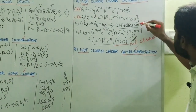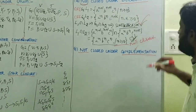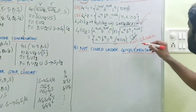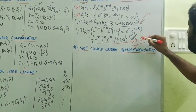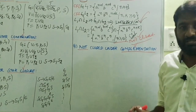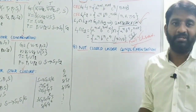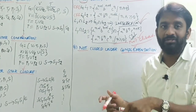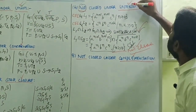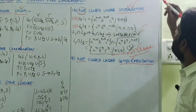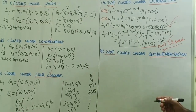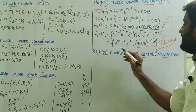By grammar construction we can prove closure under intersection, but by taking the language intersection we can prove it is not closed — this is a contradiction. Based on this contradiction, we prove that two context-free languages are not closed under intersection.